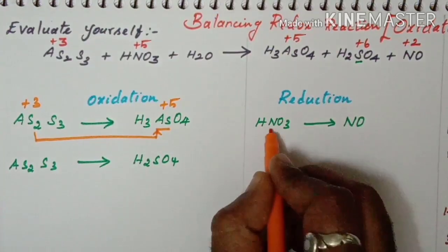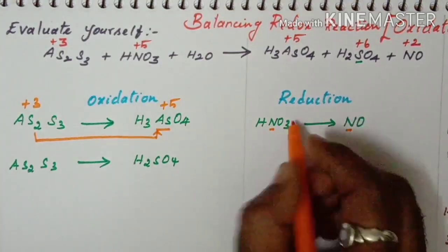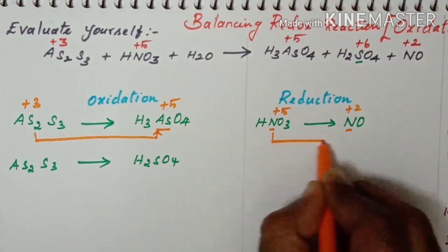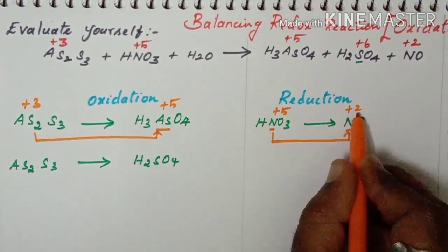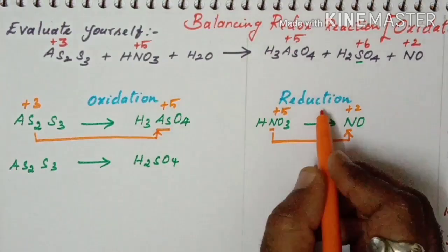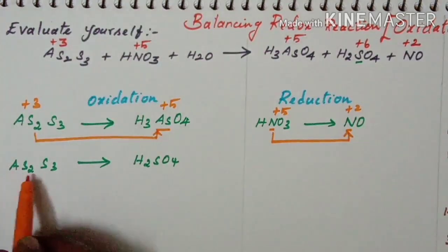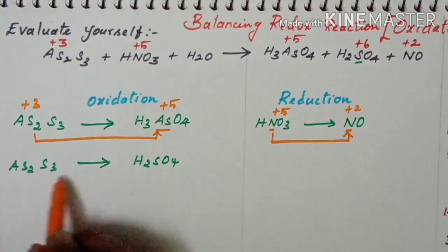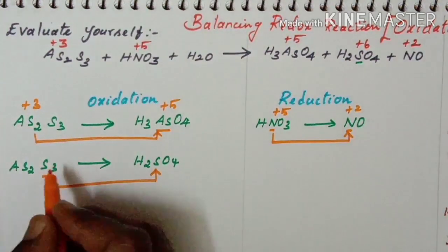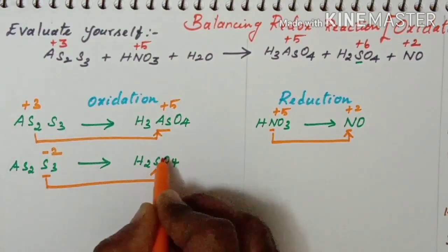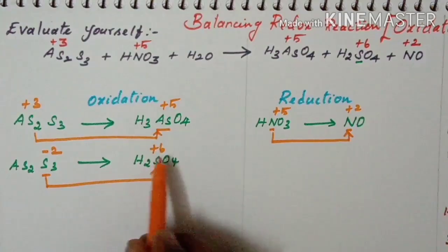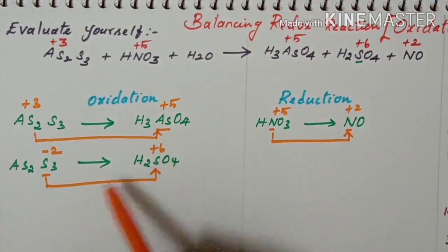For sulfur in AS2S3 the oxidation number is minus 2, and in H2SO4 it is plus 6 — an increase of 8, so sulfur is also oxidized. For nitrogen, going from plus 5 in HNO3 to plus 2 in NO is a decrease, so this is reduction.